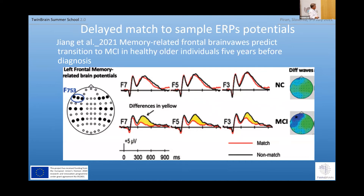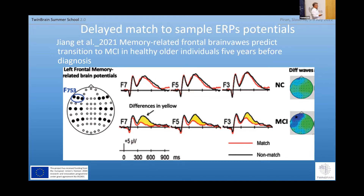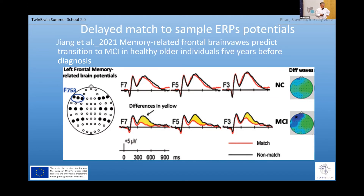She found a big asymmetry in terms of left-right frontal leads, and you can see the difference between the match and no-match conditions. These are people predicting who will convert to AD after five years, and she found that the biggest difference is over the left frontal side — specifically this so-called late positivity. That's another way of doing it. If we are looking at our task, I believe we should also include, in addition to motion perception, any kind of memory task. One of the first signs of AD is memory impairment, and a delayed match-to-sample task might be the best.